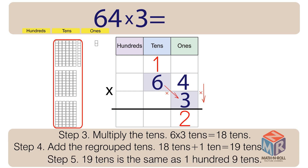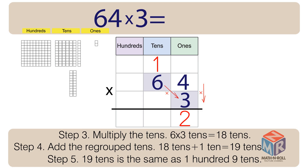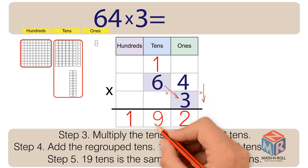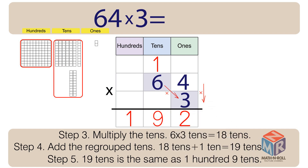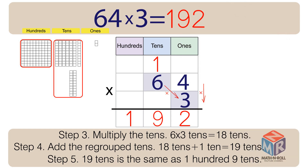Step 5: 19 tens is the same as 100 and 9 tens. So 64 times 3 is equal to 192.